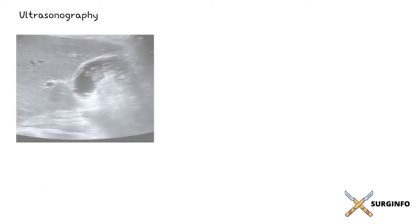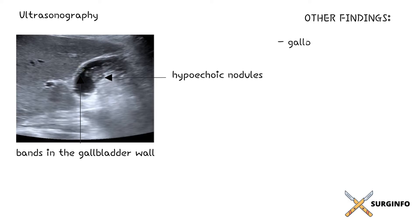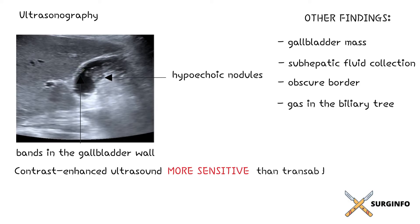Features of xanthogranulomatous cholecystitis on ultrasonography include hypoechoic nodules or bands in the gallbladder wall and a diffusely thickened gallbladder. Other findings include a gallbladder mass, subhepatic fluid collection, obscure border between the gallbladder and liver, and rarely gas in the biliary tree in patients with a biliary fistula. Concurrent gallstones are frequently present. Contrast-enhanced ultrasound may be more sensitive than transabdominal ultrasound. However, findings on ultrasonography are not specific for xanthogranulomatous cholecystitis.